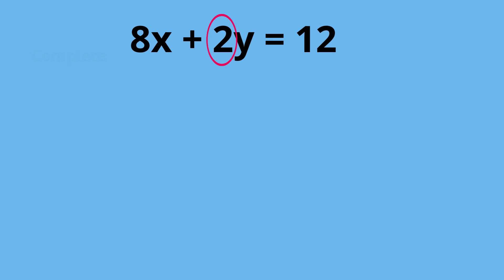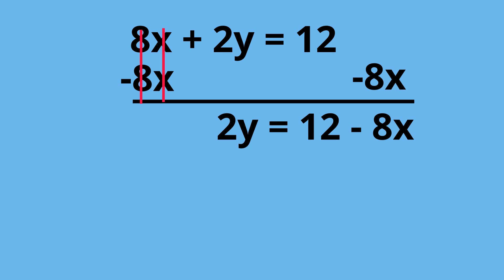Let's use an inverse operation and subtract 8X from both sides. When we do that, the 8X cancels and we're left with 2Y equals 12 minus 8X.